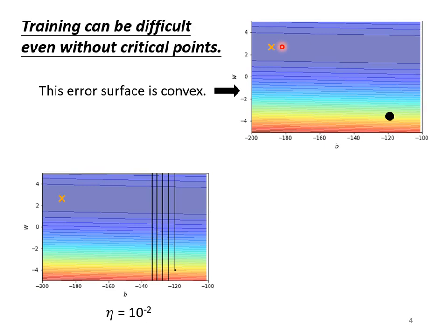For example, when the learning rate is set to 10 to the power of minus 2, my parameters were caught between the two cliffs of a canyon, oscillating back and forth. I can't lower my loss even though the gradient is still very large. You might say it's because the learning rate is too high — the step size is too large, so we won't reach the bottom. Lowering the learning rate should solve this, right? Not really.